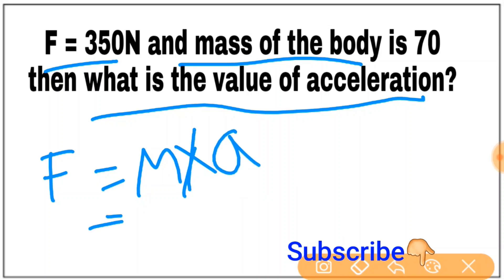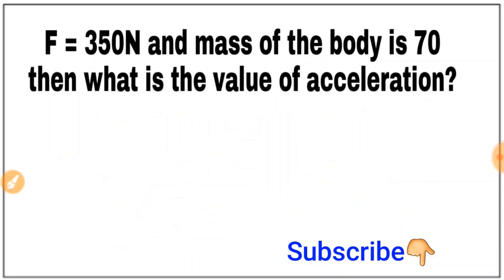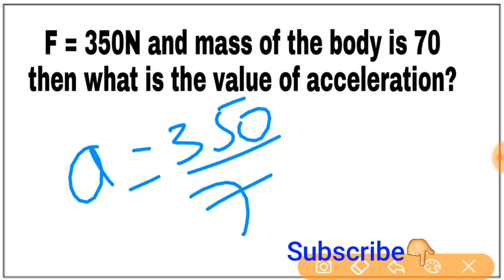F is equal to m into a. F is equal to 350, is equal to 70 into a. The value of a is 350 divided by 70.